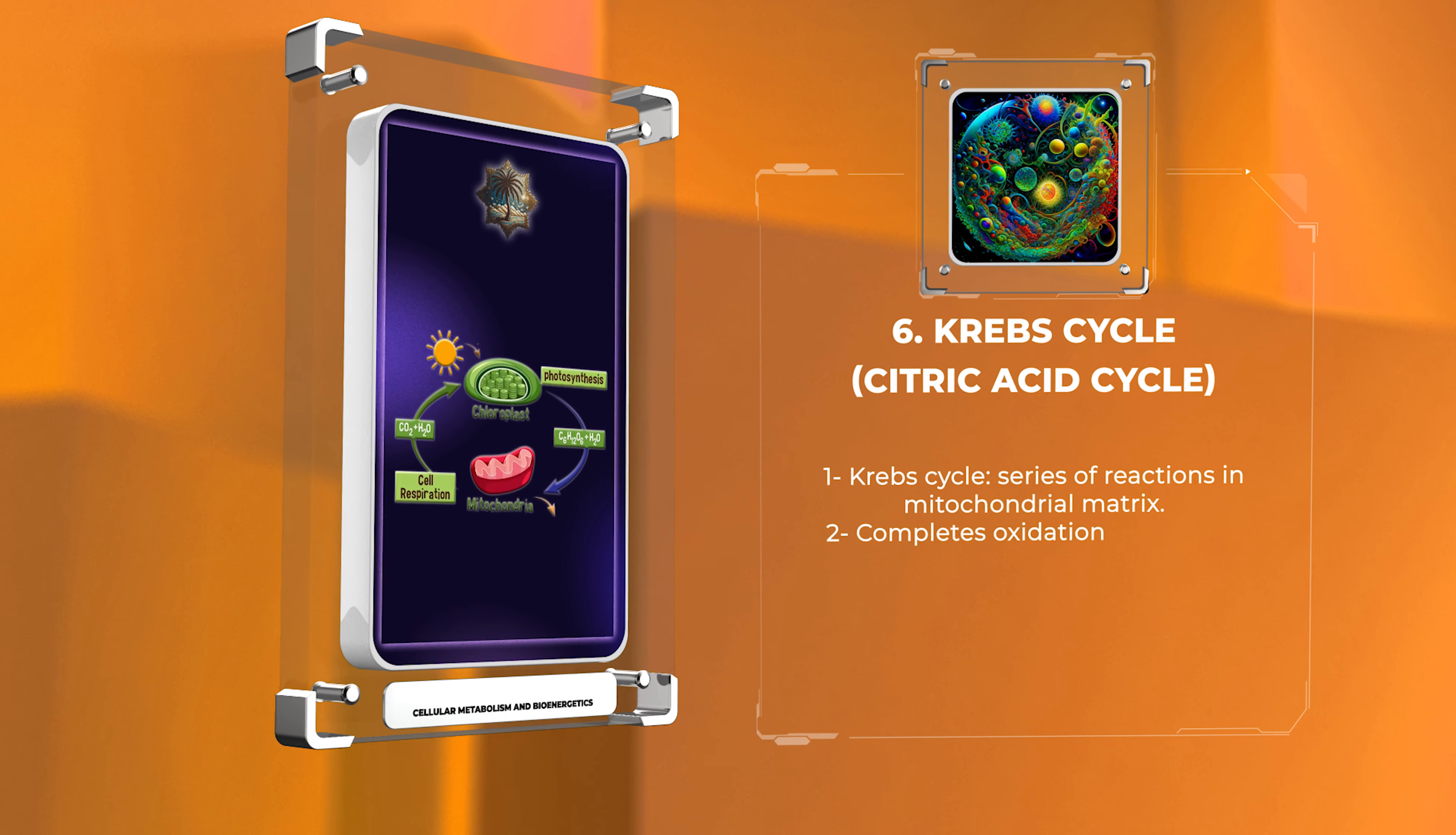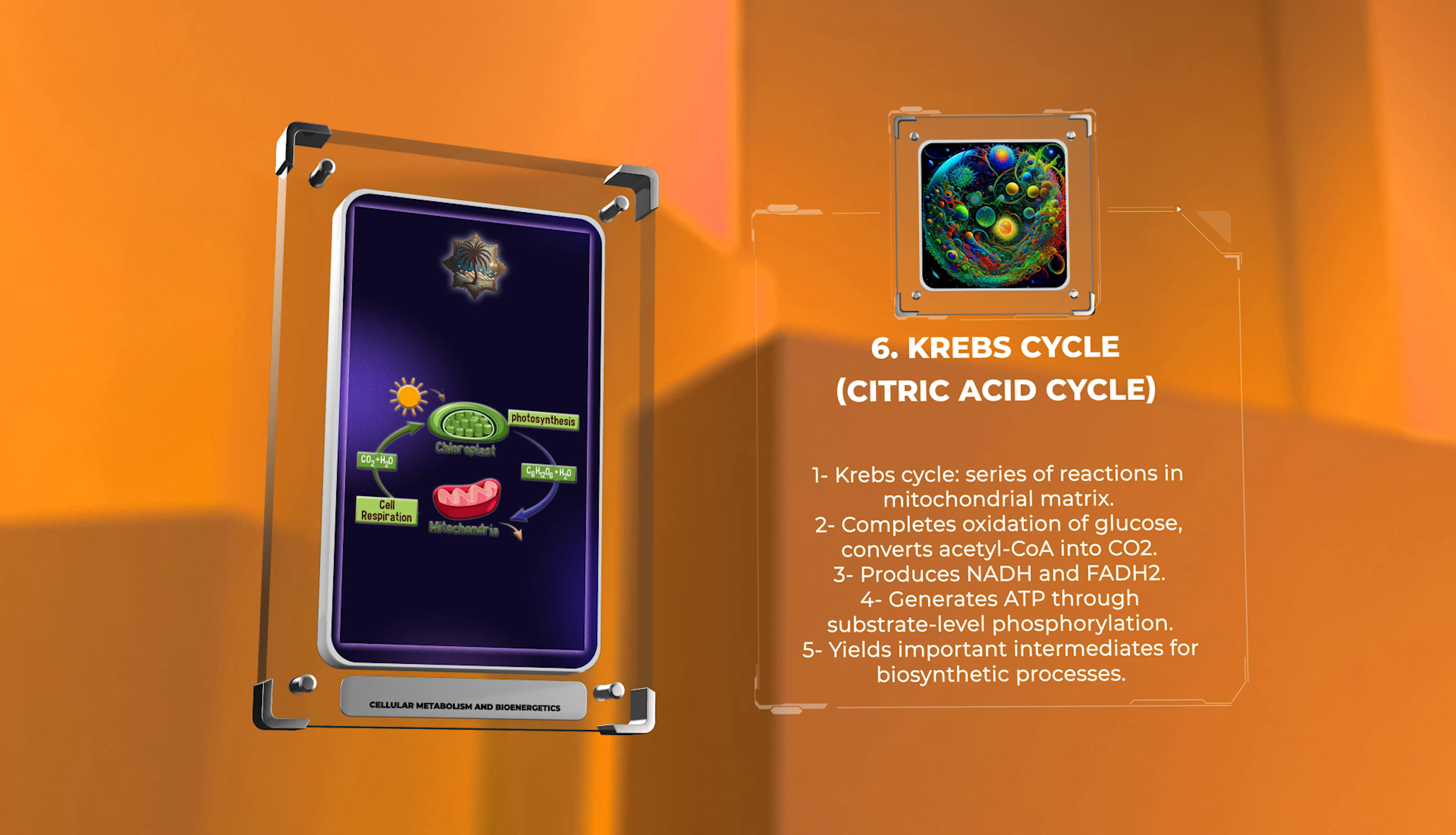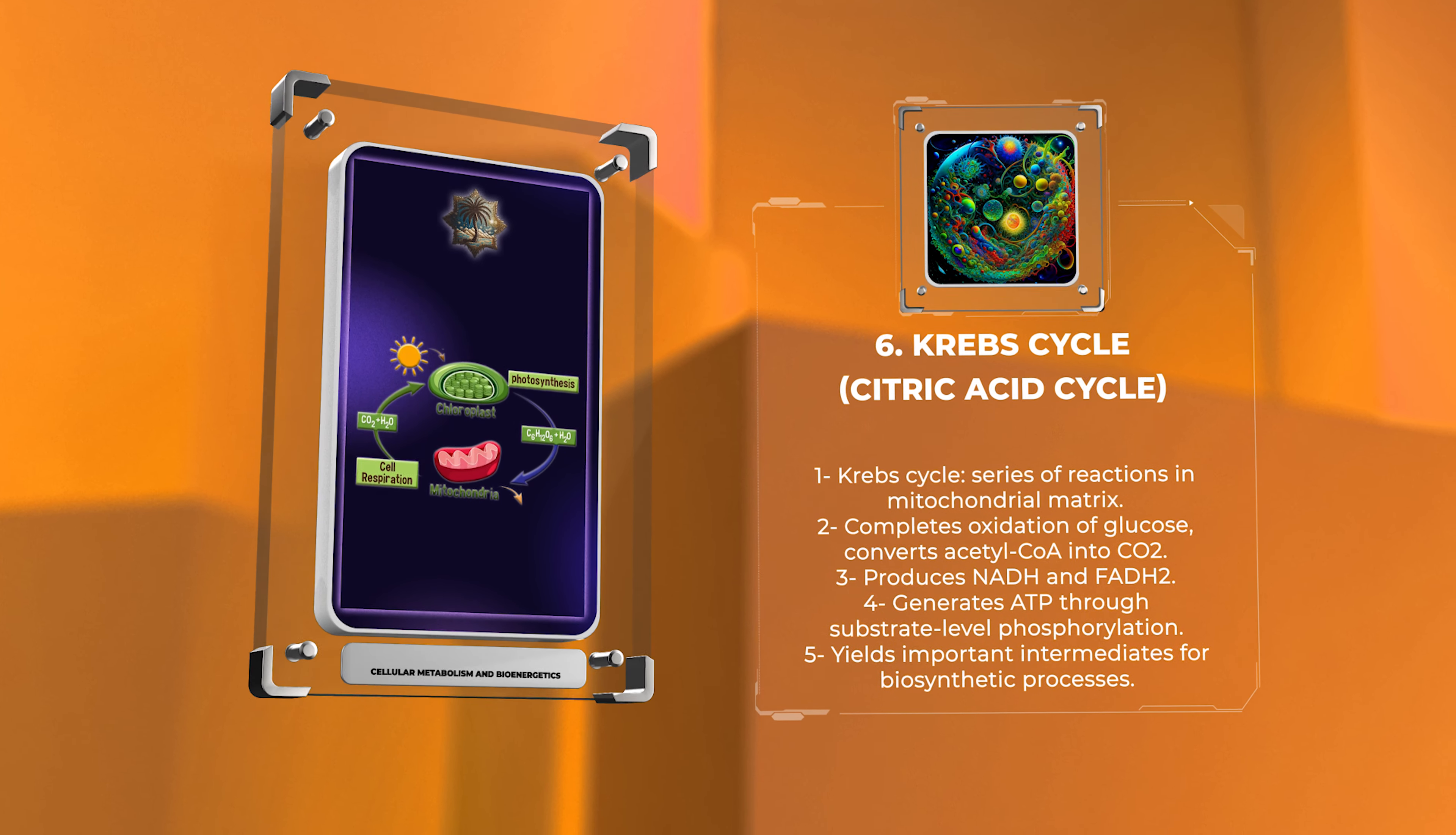The Krebs cycle is a series of reactions that occur in the mitochondrial matrix. It completes the oxidation of glucose by converting acetyl-CoA into CO2, producing NADH and FADH2, and generating ATP through substrate-level phosphorylation. The cycle also yields important intermediates for other biosynthetic processes.